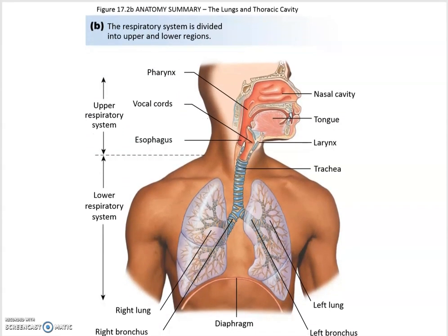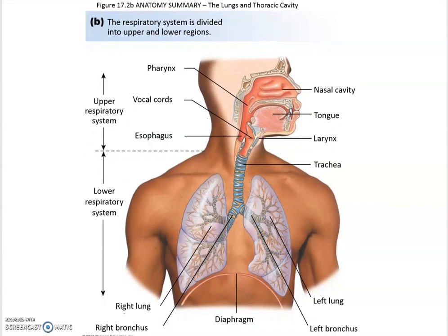In anatomy review, the upper respiratory tract runs from the nasal cavity through the larynx down to roughly the esophagus. At the junction to the trachea, the lower respiratory tract begins, which includes the trachea, the bronchial tree, and the actual lungs with the alveoli.